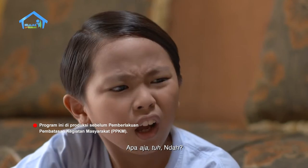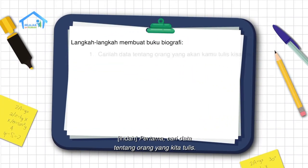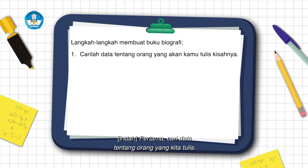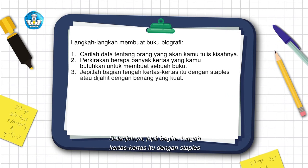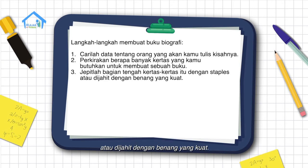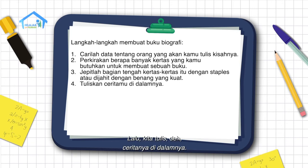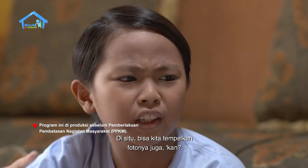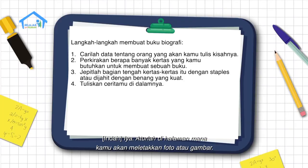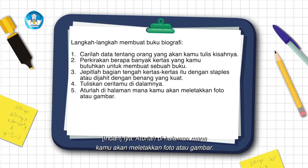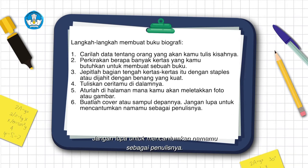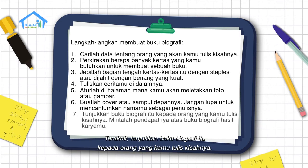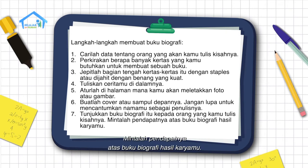Apa saja tuh langkah-langkahnya? Pertama, cari data tentang orang yang kita tulis. Kedua, perkirakan berapa banyak kertas yang kita butuhkan. Selanjutnya, jepit bagian tengah kertas-kertas itu dengan staples atau dijahit dengan benang yang kuat. Lalu kita tulis ceritanya di dalamnya, dan bisa ditempelkan fotonya juga. Aturlah di halaman mana kamu akan meletakkan foto atau gambar. Setelah itu buat cover atau sampul depannya, jangan lupa cantumkan namamu sebagai penulisnya. Terakhir, tunjukkan buku biografi itu kepada orang yang kamu tulis kisahnya dan mintalah pendapatnya.